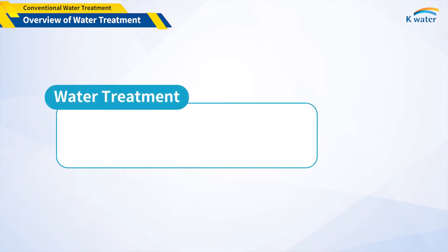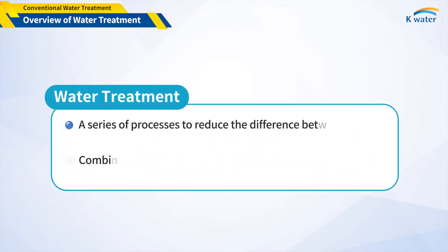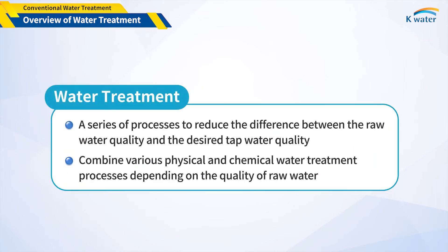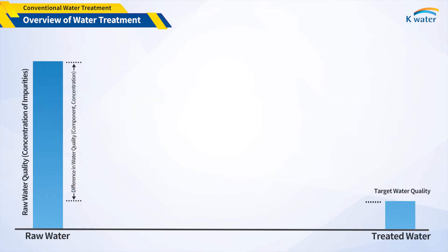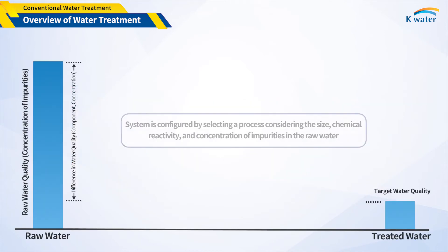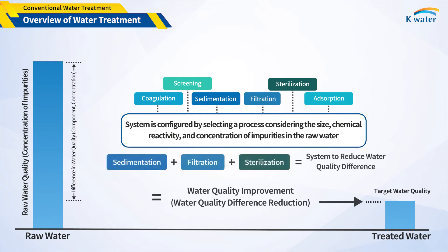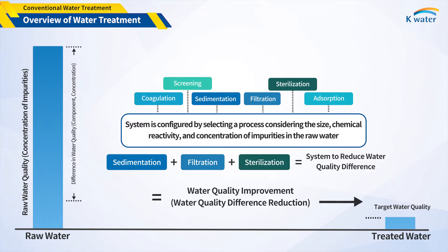Water treatment is a specialized process to reduce the difference between the raw water quality and the required tap water quality. Water treatment consists of combining various physical and chemical processes, depending on the quality of raw water and the content of various impurities. If the raw water quality is poor or the required water quality standards are high, high treatment costs and advanced technology are required.